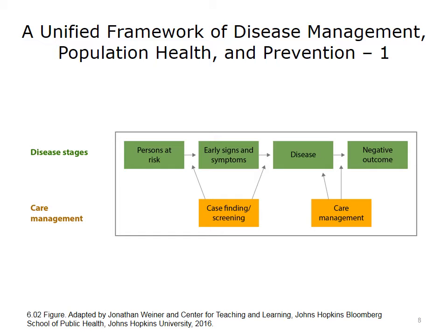Understanding risk is essential at all stages of this framework. Looking at the green boxes at the core of the framework, we present the continuum of individual health. A person, a patient, a consumer could potentially be at risk, all the way to the left of the framework. Some of us are at higher risk or lower risk of various diseases, based on where we live, what conditions we may have, and of course our genetic predisposition, though in most cases that's not yet measurable on a wide basis.